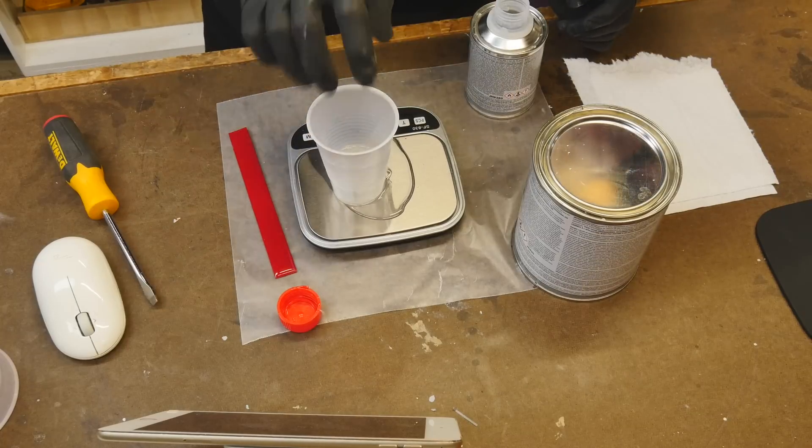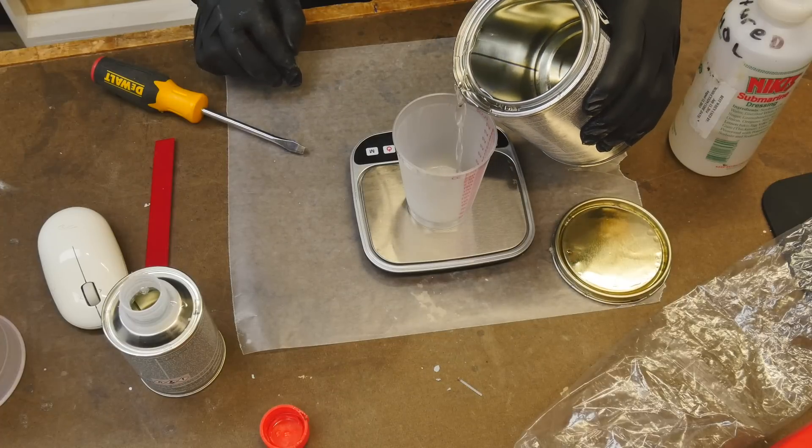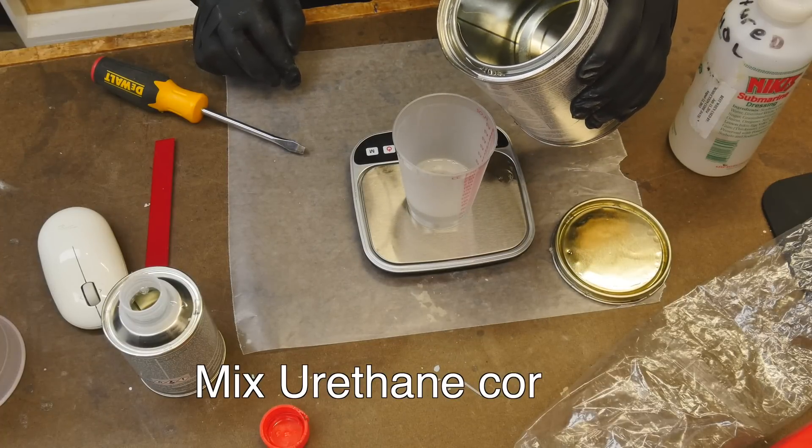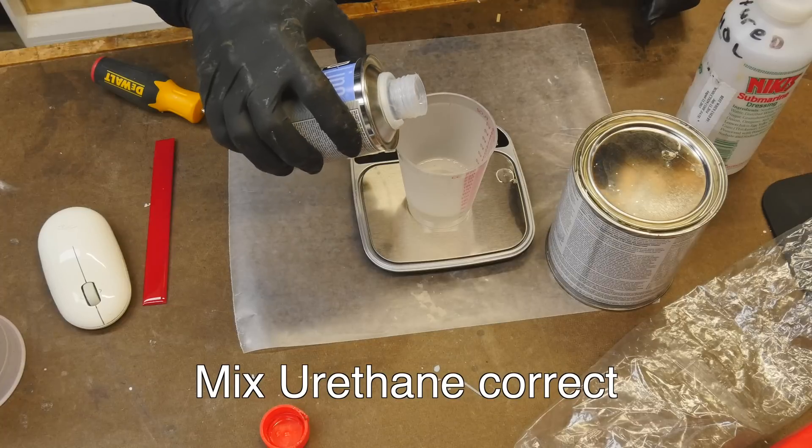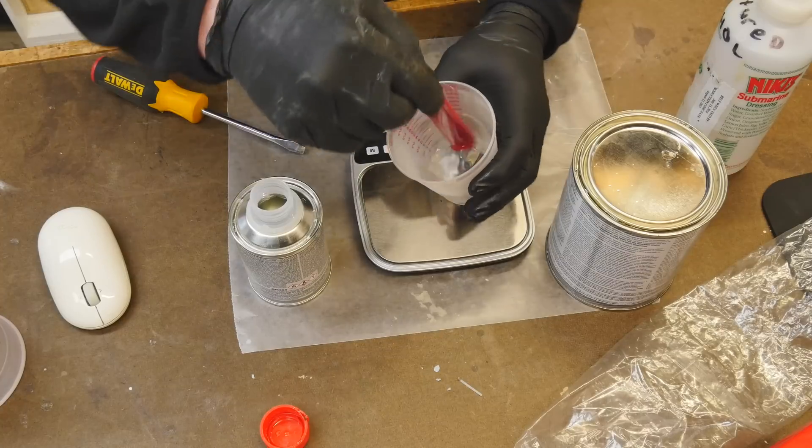And I put in the activator and it almost instantly chews through the polystyrene cup. So let's try that again with a regular plastic cup that is not going to be affected by the activator. So this is a two-part urethane.